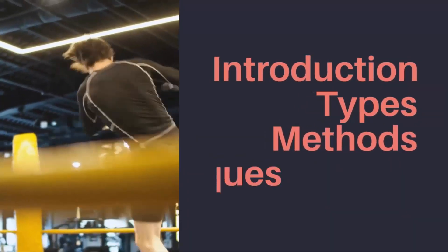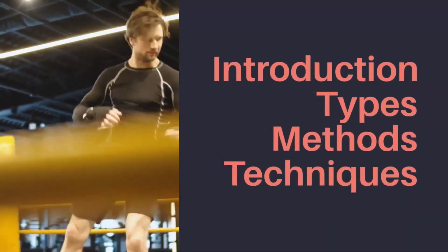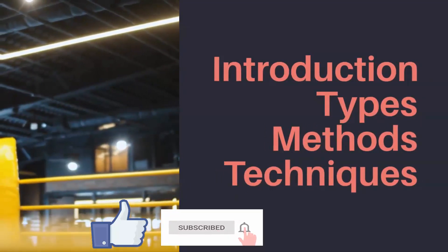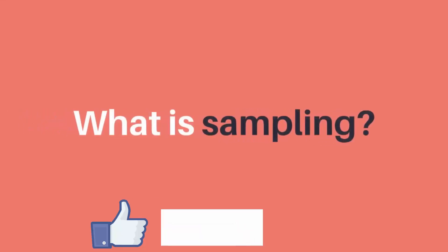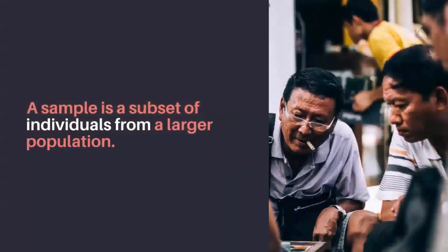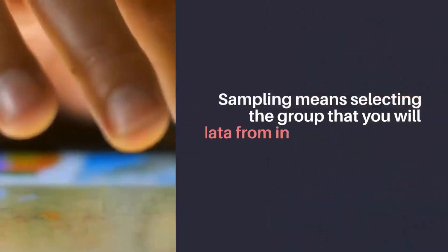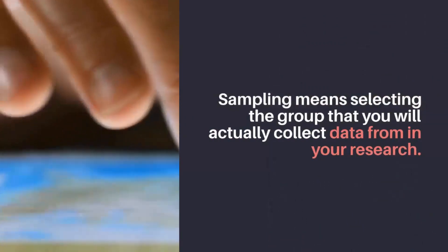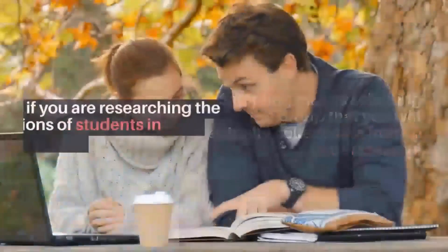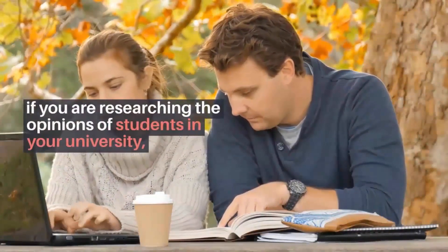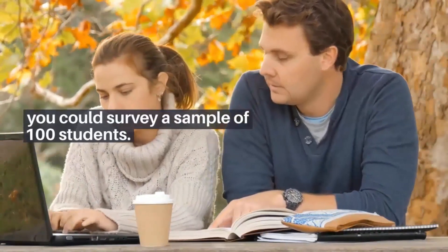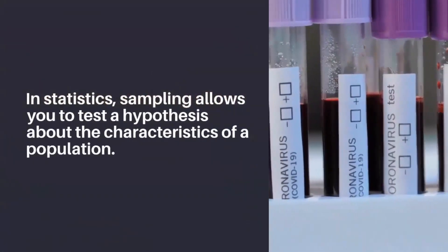Today we discuss a brief introduction of sampling methods, types and techniques with examples. First we need to understand what is sampling. A sample is a subset of individuals from a larger population. Sampling means selecting the group that you will actually collect data from in your research. For example, if you are researching the opinions of students in your university, you could survey a sample of 100 students. In statistics, sampling allows you to test a hypothesis about the characteristics of a population.